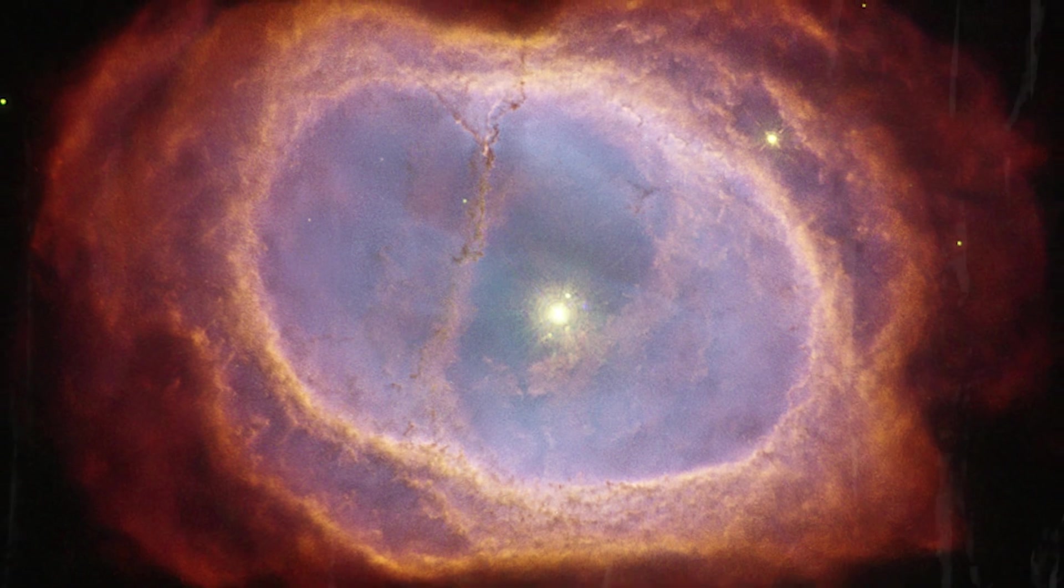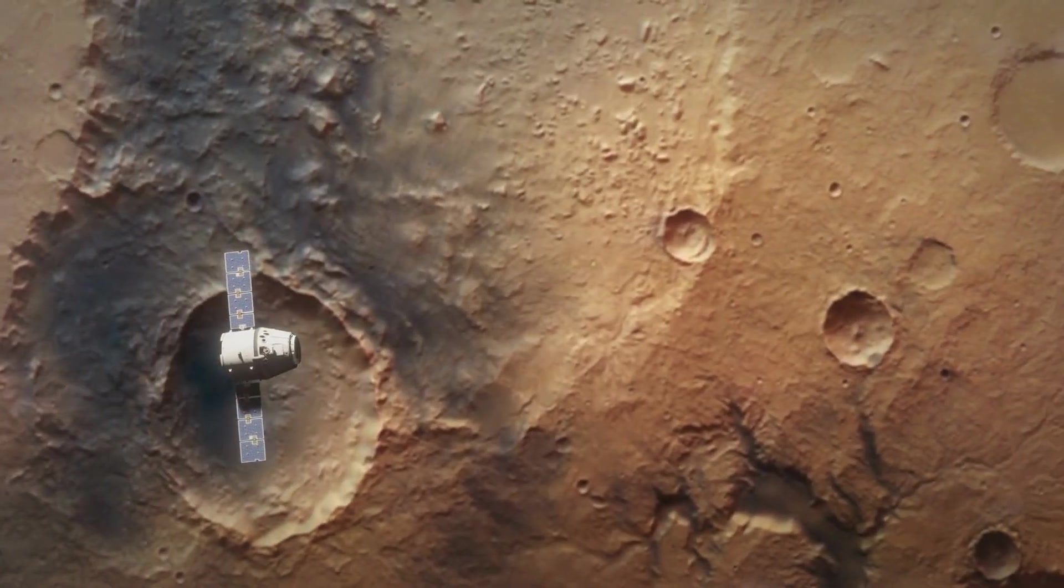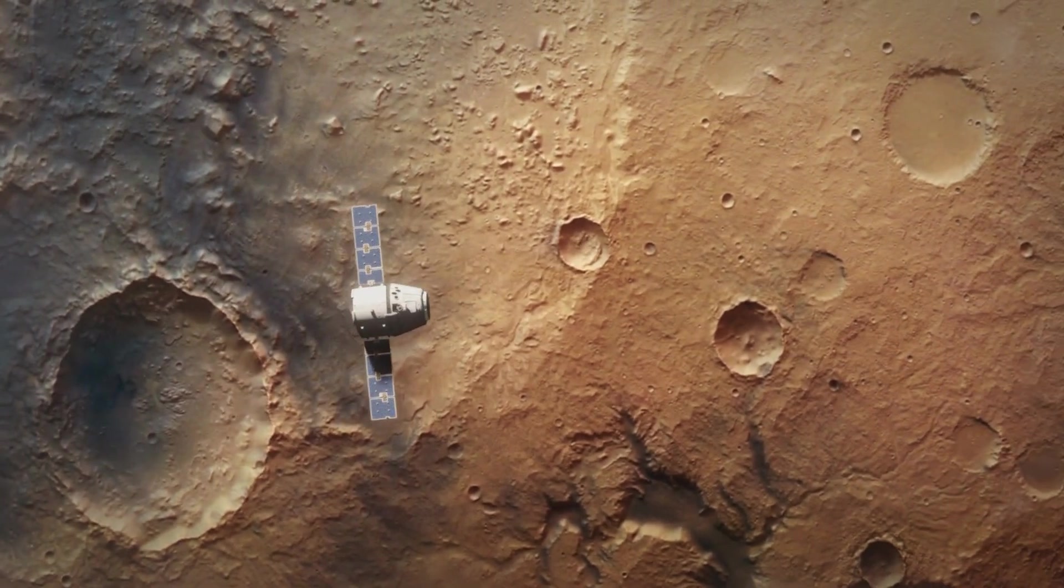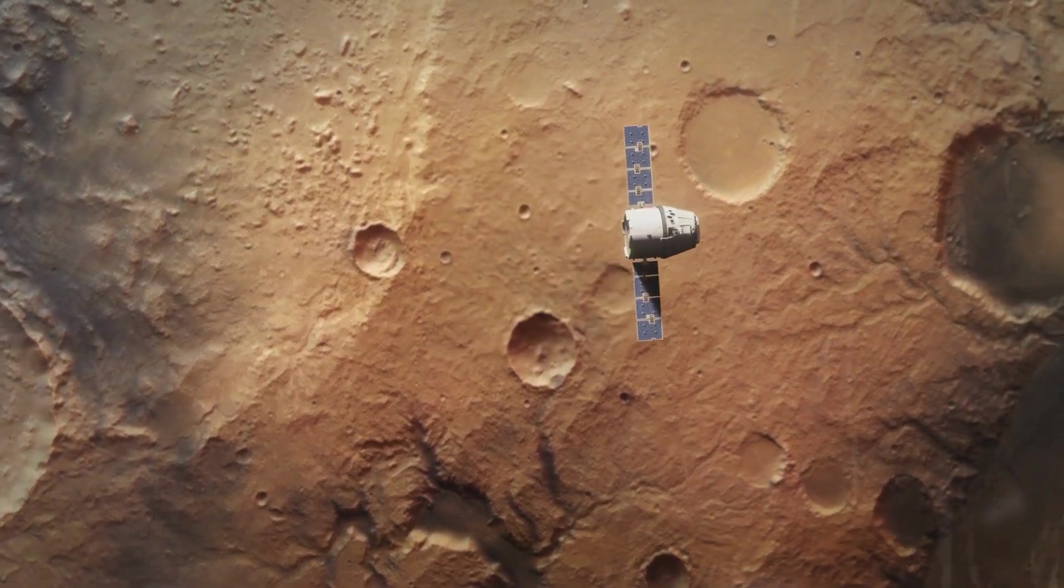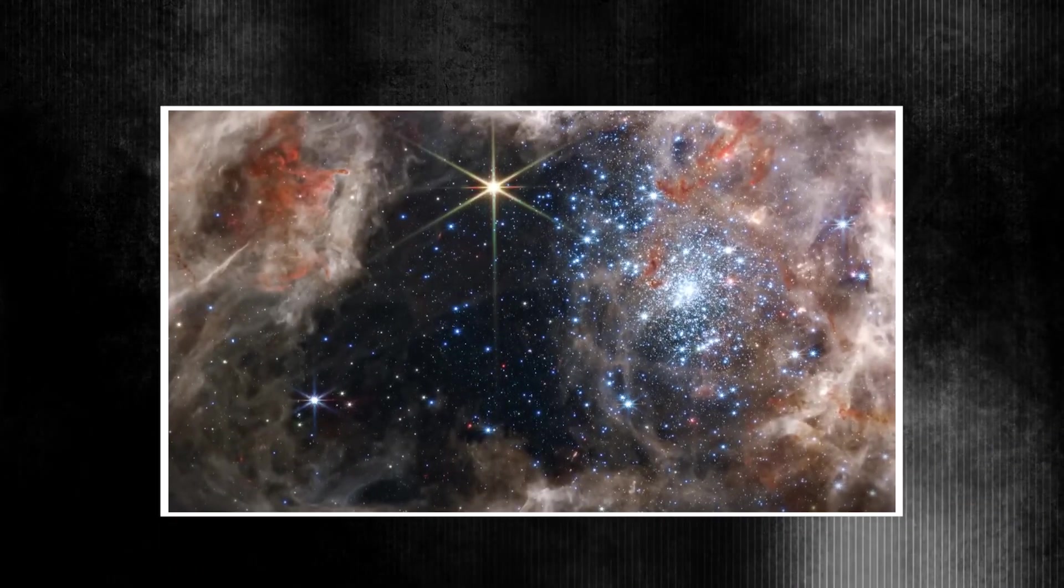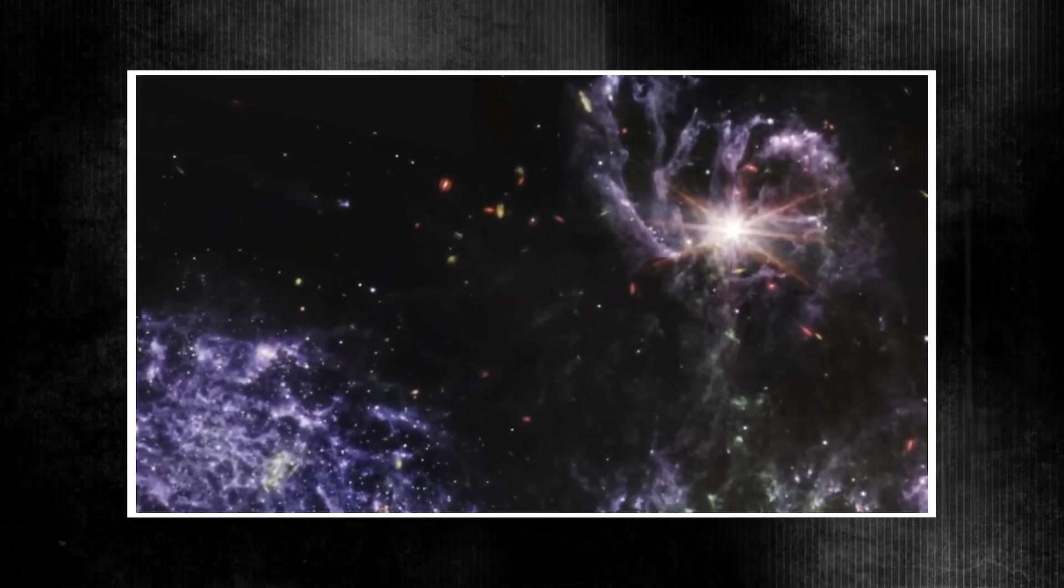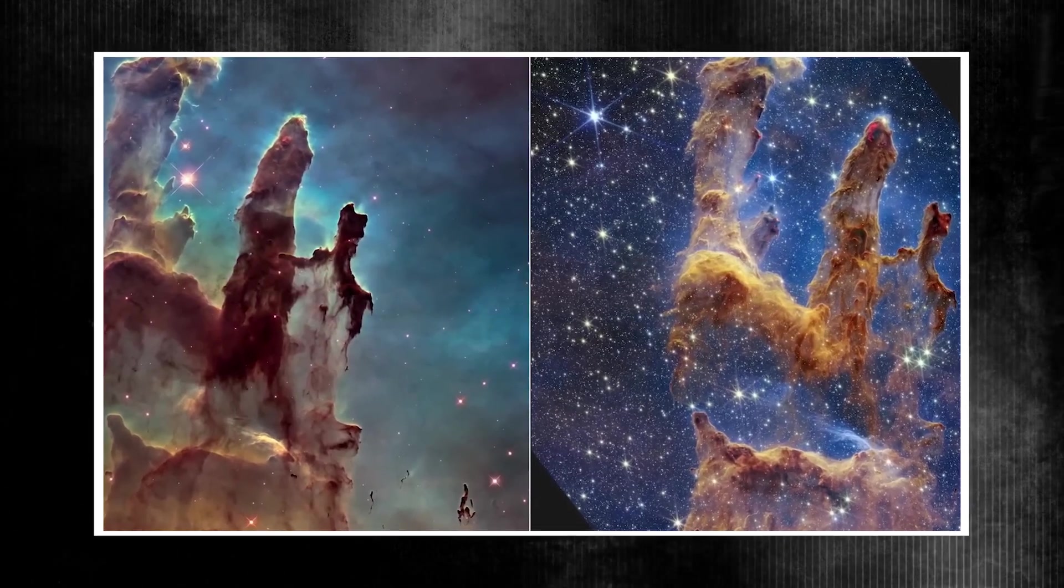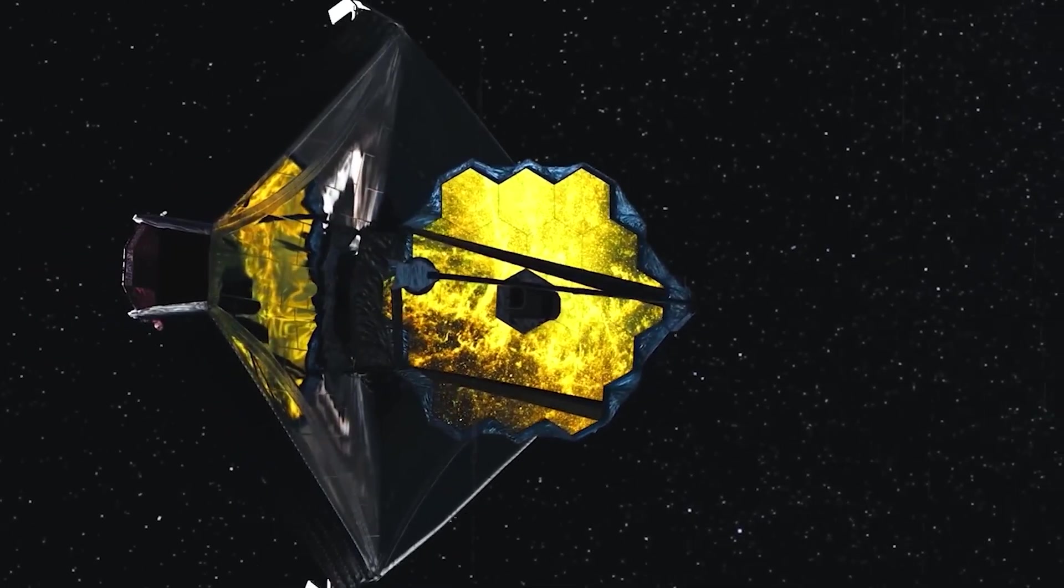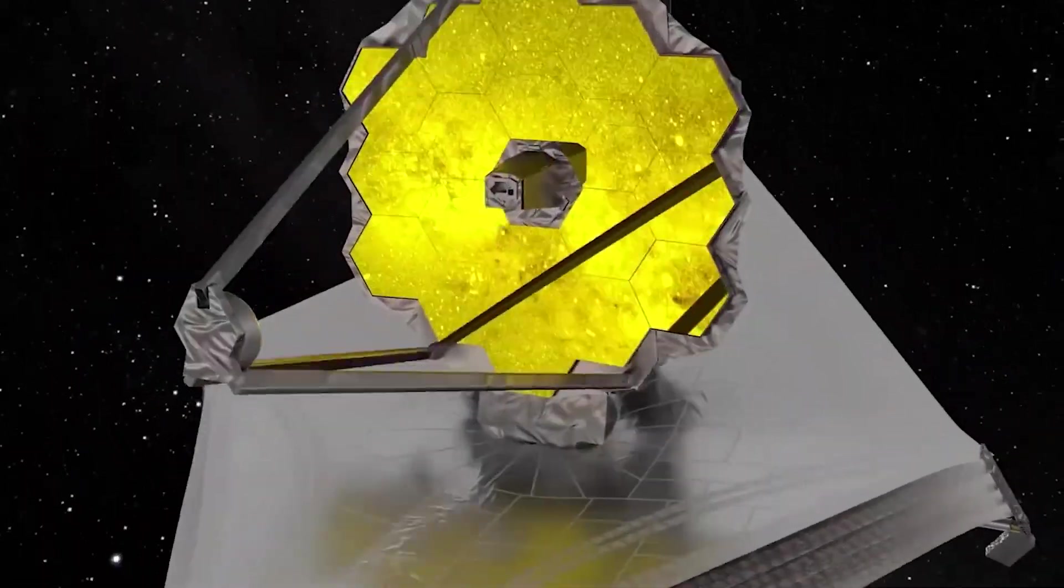The James Webb Space Telescope, JWST, stationed at the second Lagrange Point, L2, has made extraordinary contributions to our understanding of the cosmos in 2024. Situated approximately 1.5 million kilometers, about 1 million miles from Earth, this strategic location provides a stable environment for its mission. The gravitational balance at L2 allows JWST to orbit this point while maintaining an unobstructed view of deep space.